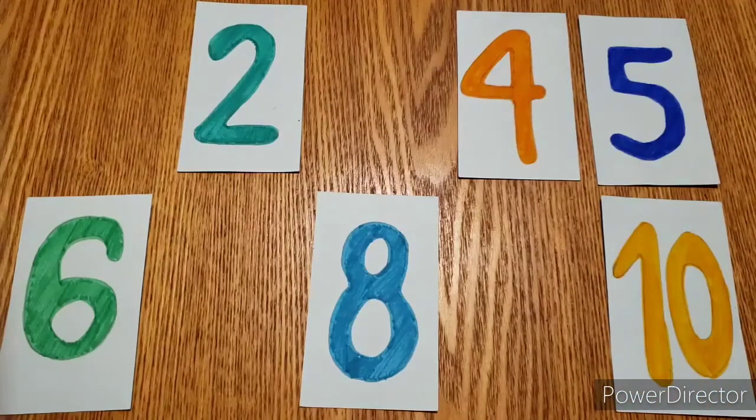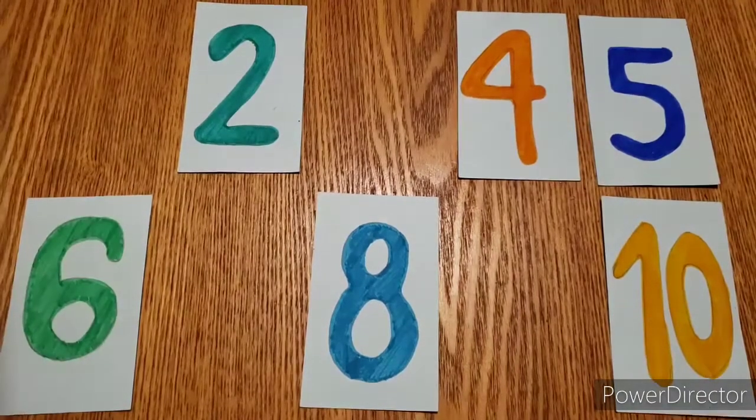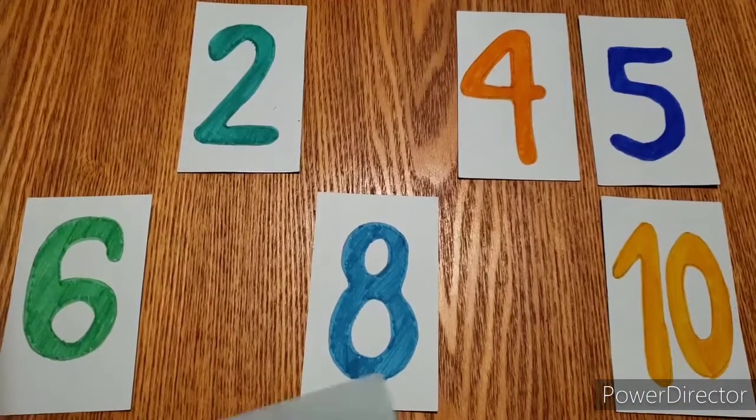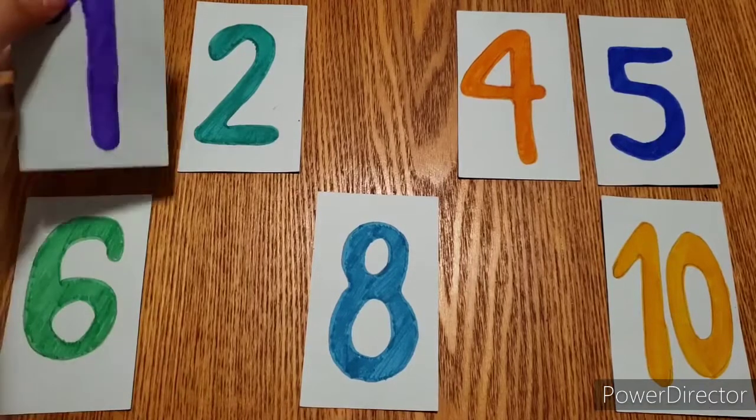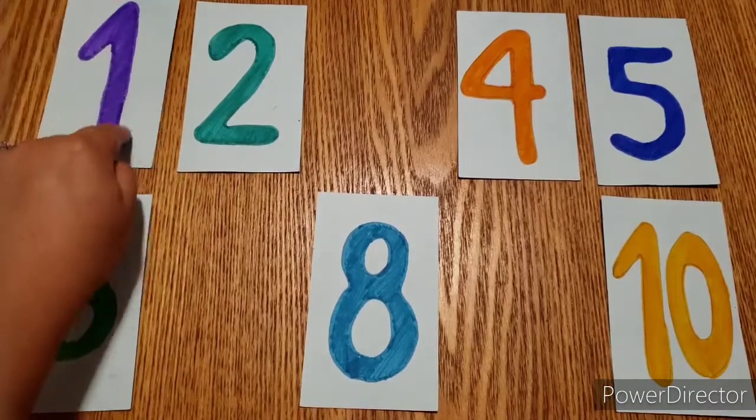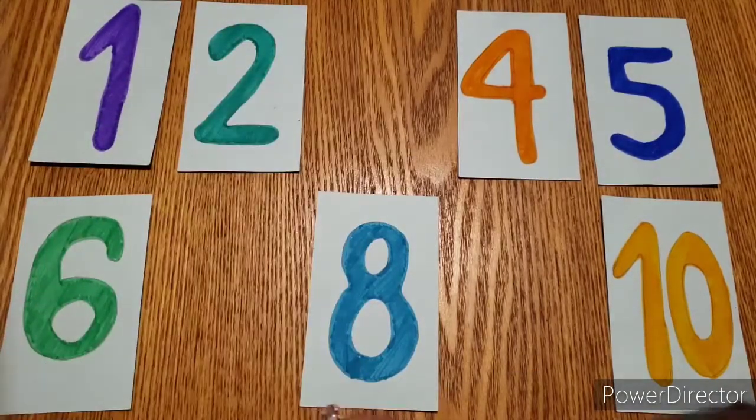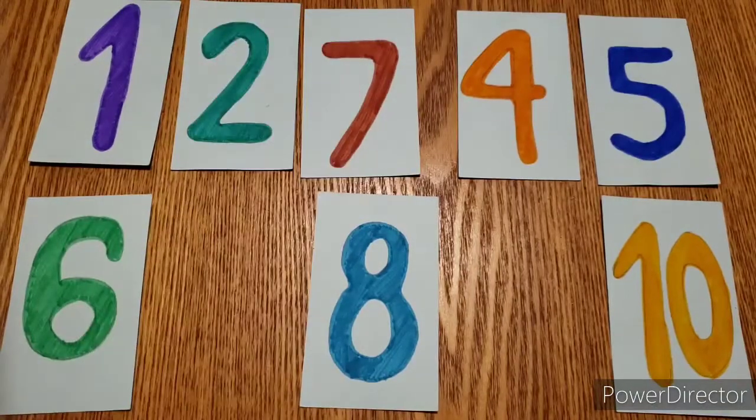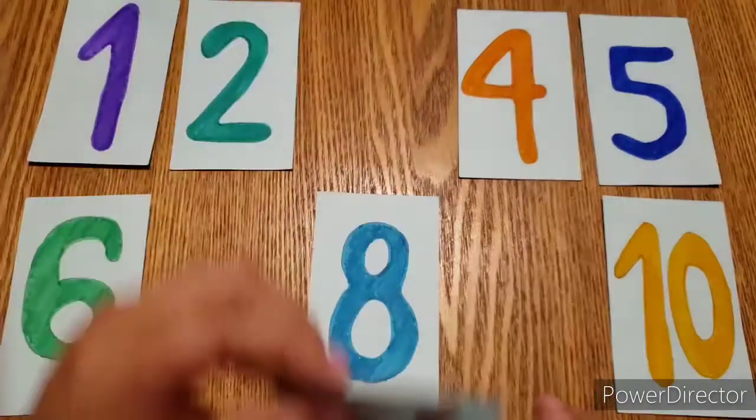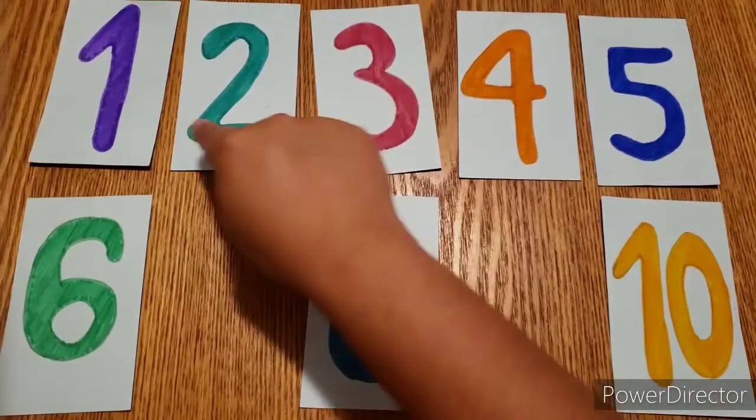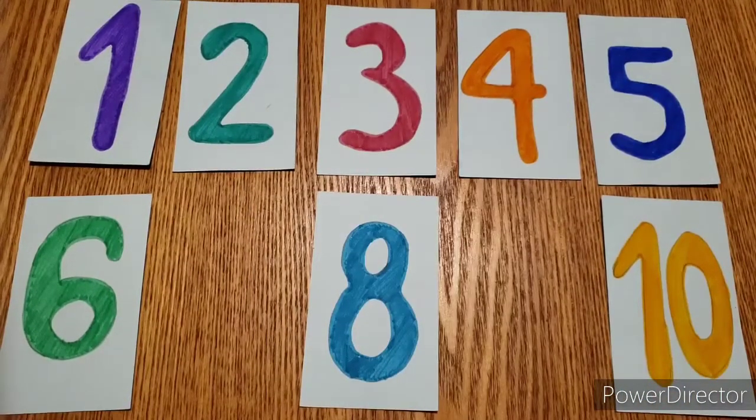So let's get started. So what is the first number? We all should know that the first number is one. So we have one, two, blank. Is it seven? No. Is it three? One, two, three? Yes.